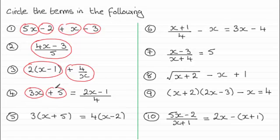Second term plus 5. And then on the right hand side of this equation, we've got one term. All of 2x minus 1 divided by 4.